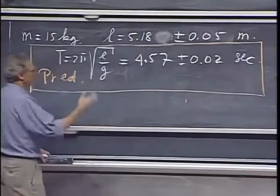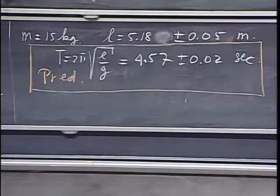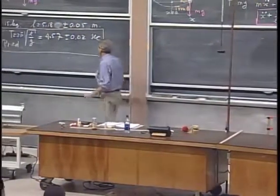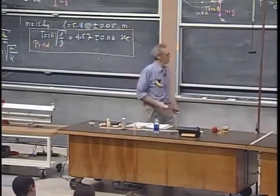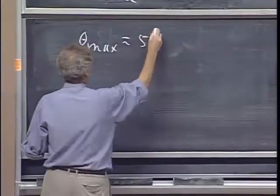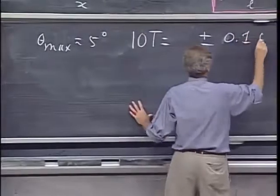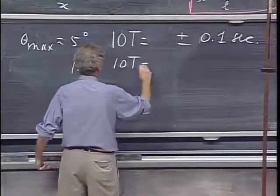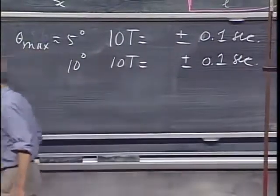I'm going to oscillate it from two different angles: a five-degree angle and a ten-degree angle. In order to get my relative error down, I will oscillate ten times. At angle theta-maximum of roughly five degrees, ten T equals something plus or minus my reaction time of 0.1 seconds. Then I will do it from ten degrees, and again ten T with reaction time no better than 0.1 seconds. So let's do that first.